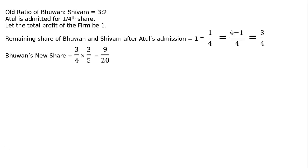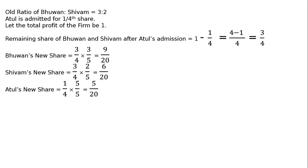Bhuvan's new share is equal to 3/4 multiplied by 3/5, since 3/4 is the share remaining for Bhuvan and Sivam, and 3/5 is Bhuvan's old proportion while 2/5 is Sivam's. That gives Bhuvan 9/20. Sivam's new share is 3/4 multiplied by 2/5, equal to 6/20. Atul's share of 1/4, equalized to denominator 20, is 5/20. Therefore, the new ratio of Bhuvan, Sivam and Atul is 9 to 6 to 5.